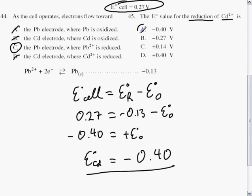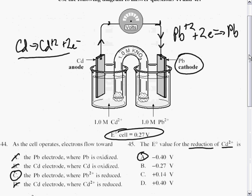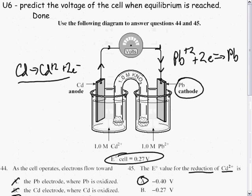Which makes this answer A. So the answer is C and A for questions 44 and 45, as a review of predicting voltage of a cell when equilibrium is reached.